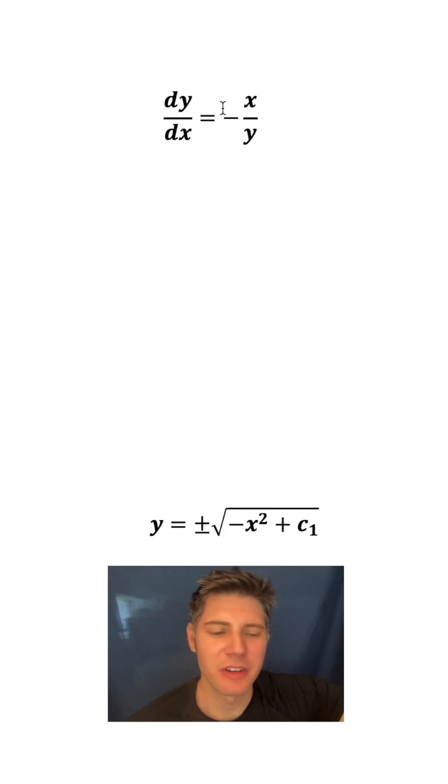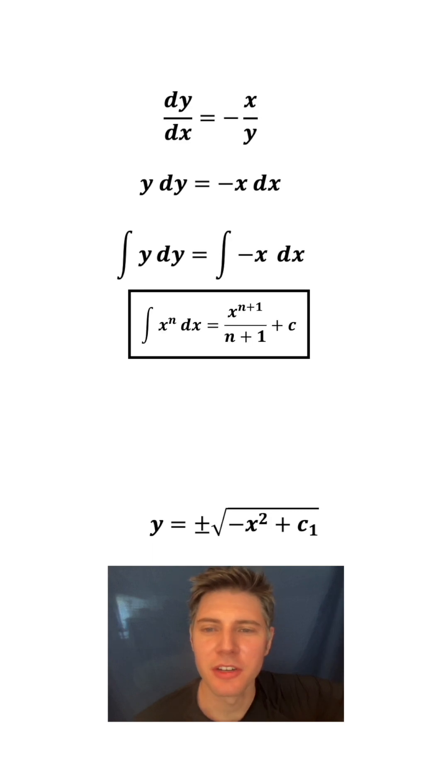So first, we have our differential equation. We multiply both sides by y dx. The y's are going to cancel on this side, and the dx's are going to cancel on this side, so we end up with y dy equals -x dx. Then we're going to do something called integration. We're going to integrate both sides of the equation. I'll make more videos about integration, but these are the notes for this type of integration. To integrate these, you just take whatever the exponent is for the variable, add 1 to it, and then divide by that same number.